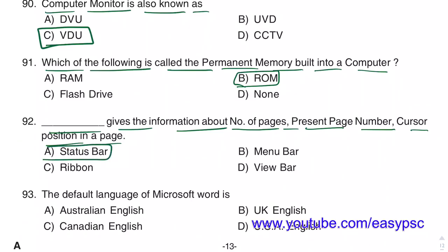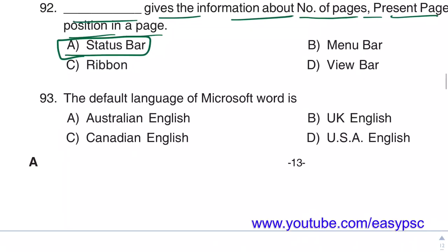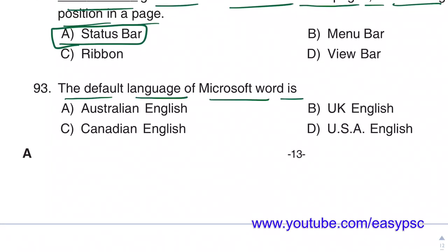The Status bar displays information about the number of pages, present page number, and cursor position. The default language of Microsoft Word is US English.